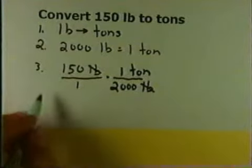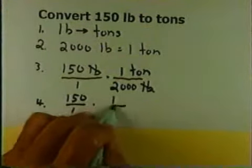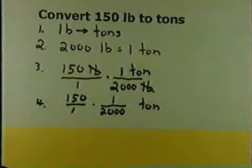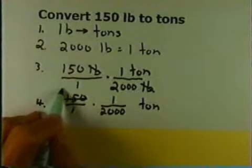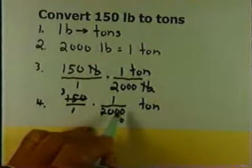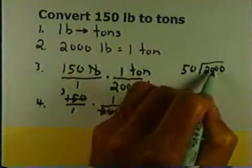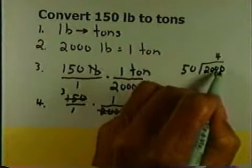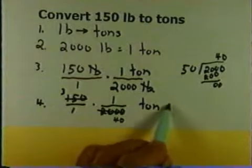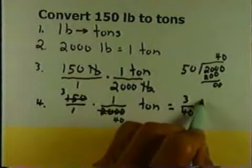Now that I have the units fixed, I can do my calculations. I have 150 over 1 times 1 over 2,000 tons. I can reduce by 50: 50 goes into 150 three times, and 50 goes into 2,000 forty times. So I multiply 3 times 1 is 3, and 1 times 40 is 40, giving me 3/40 of a ton.